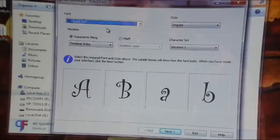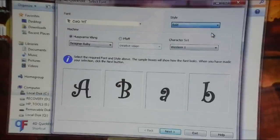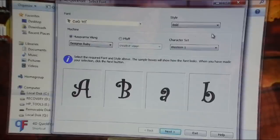And I'm going to check my style. Do I want it regular, bold, italic, bold italic? I think I'm going to go ahead and click bold just to give me a really nice bold outline. Character set Western One, I'm just going to leave that alone. Designer Ruby, that's my sewing machine, and go ahead and click next.